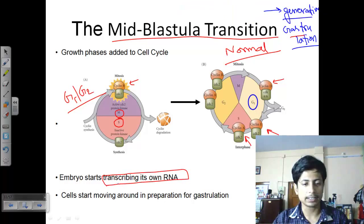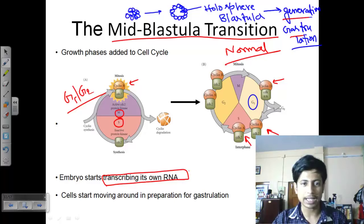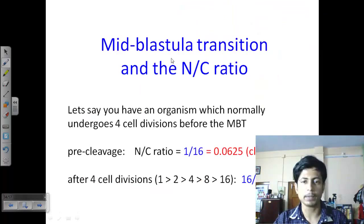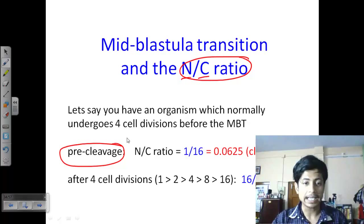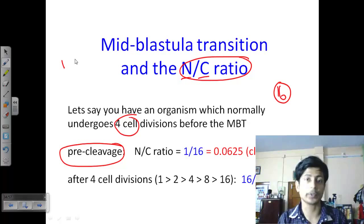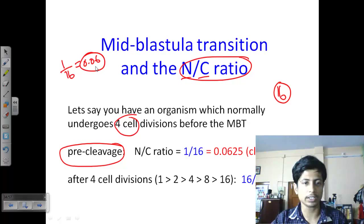At this point, the embryo starts transcribing its own RNA, and cells start moving in preparation for gastrulation. The mid-blastula transition is hugely dependent on the nucleus-to-cytoplasm ratio, or NC ratio. At the pre-cleavage stage where the zygote is formed, there is one nucleus that will eventually produce sixteen cells by transferring its cytoplasmic content. The nucleus-to-cytoplasm ratio is close to zero — approximately 0.06.